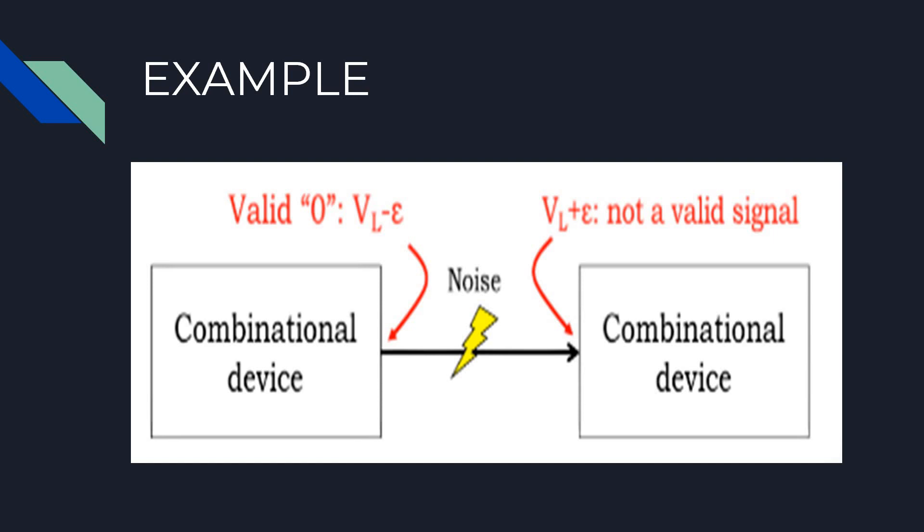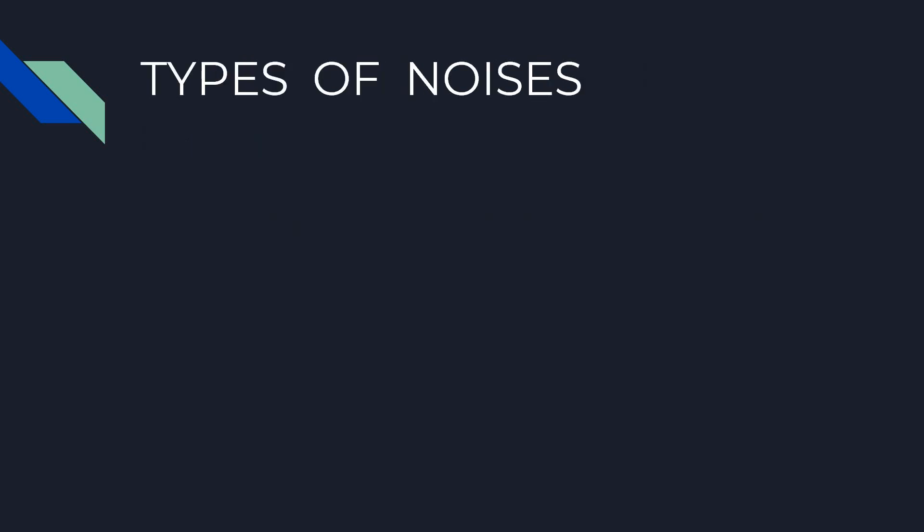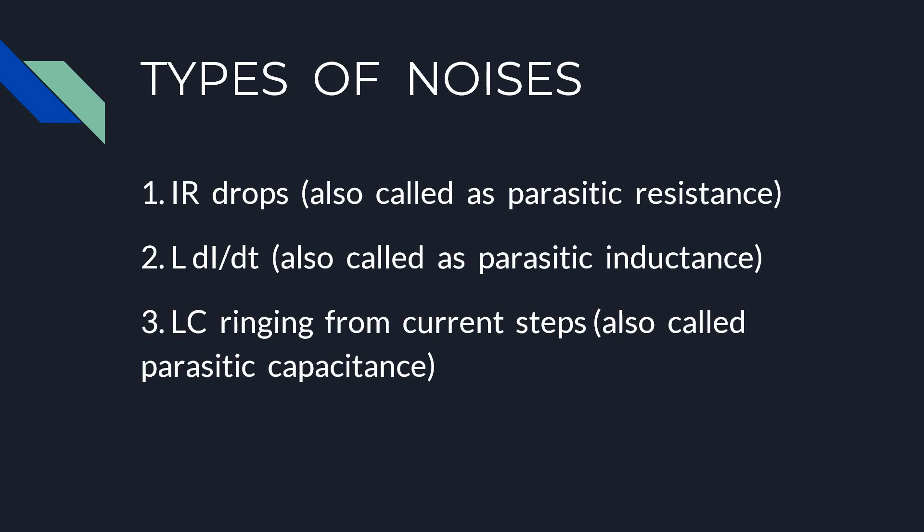First of all, what is noise? It is an unwanted disturbance in the electrical circuit. There are three types of noises. The first one is due to IR drops, also called parasitic resistance. The second one is L dI/dt drop, also called parasitic inductance. And third one is LC ringing from current steps, also called parasitic capacitance.